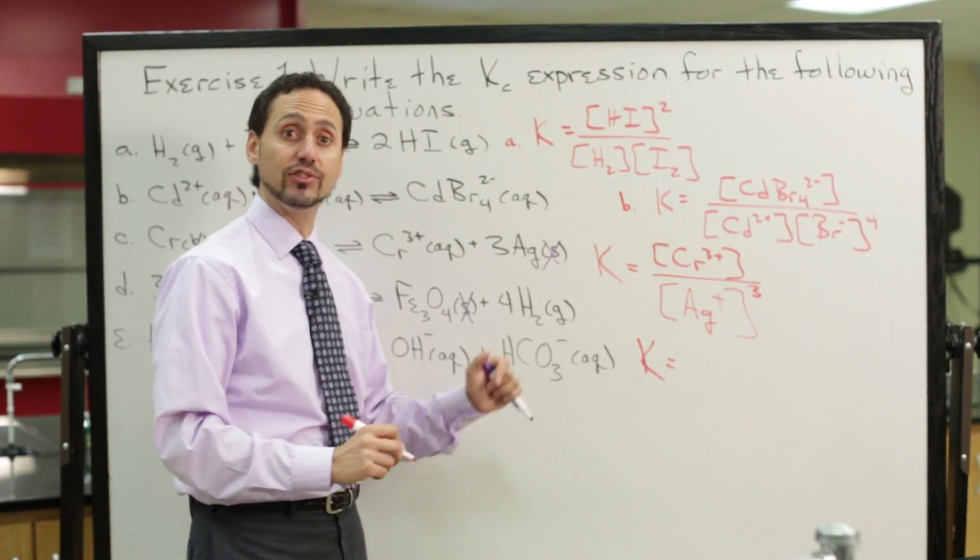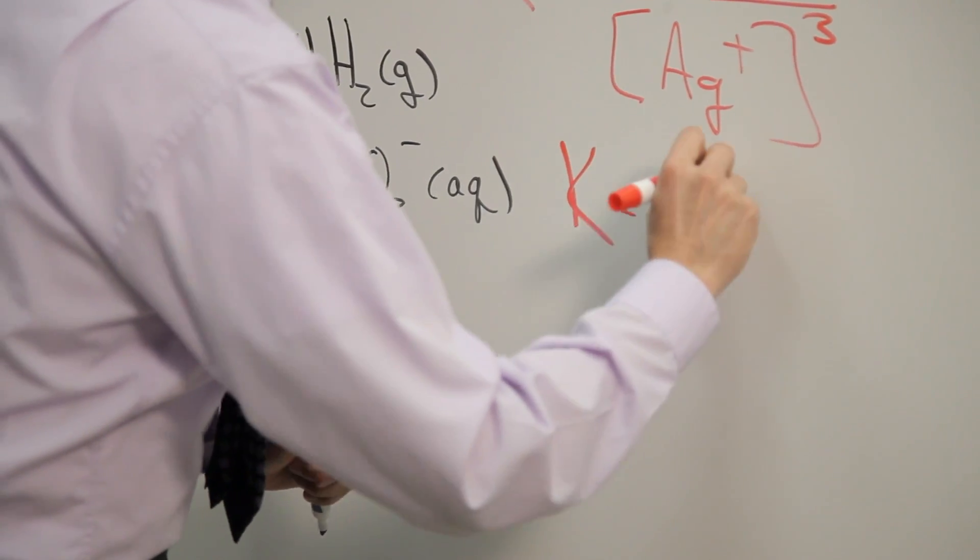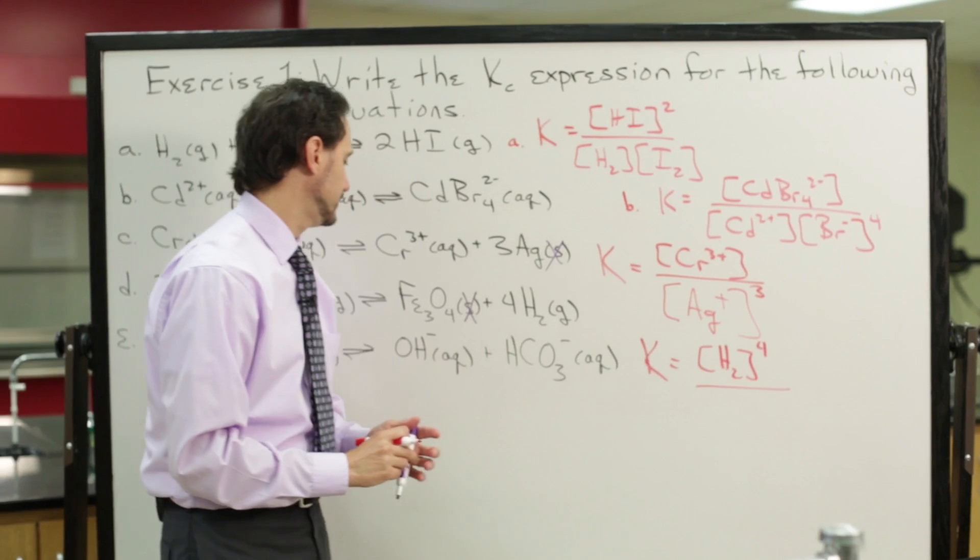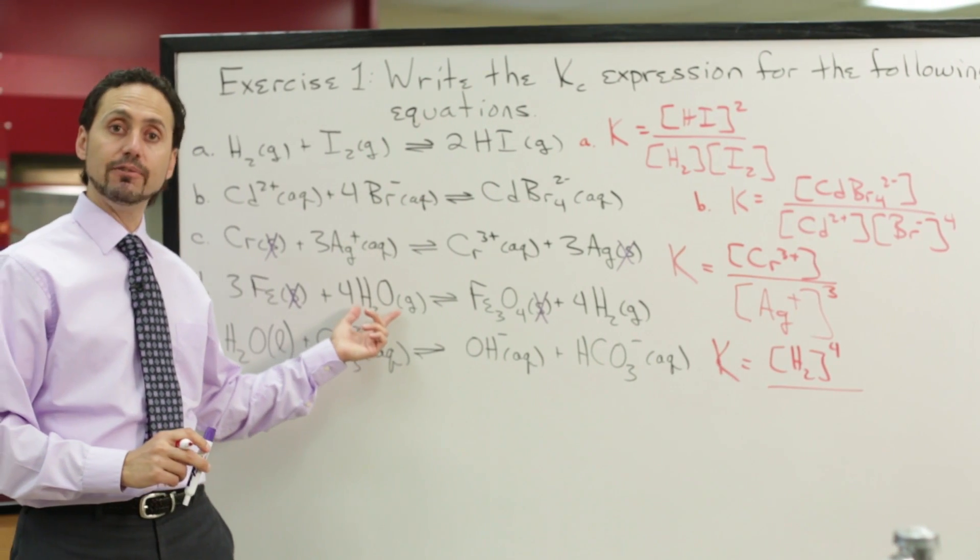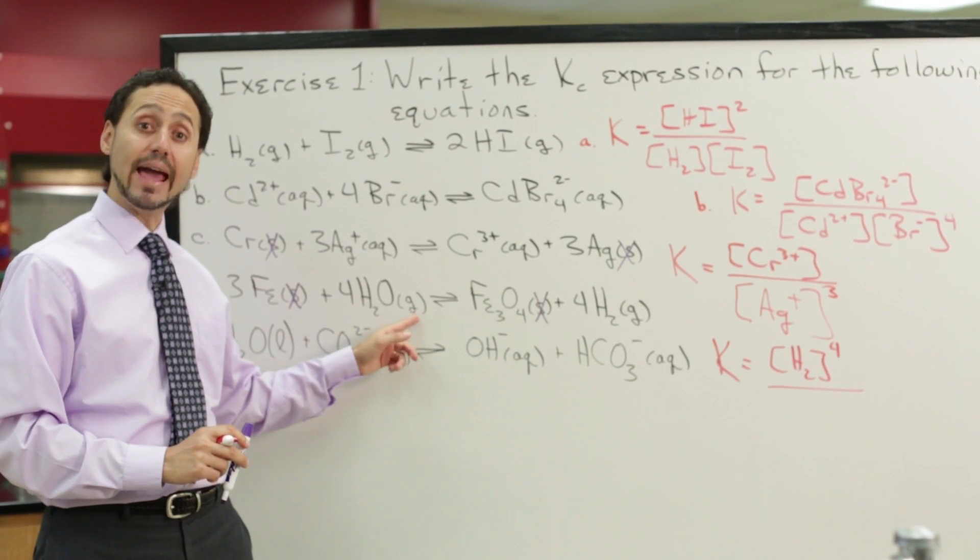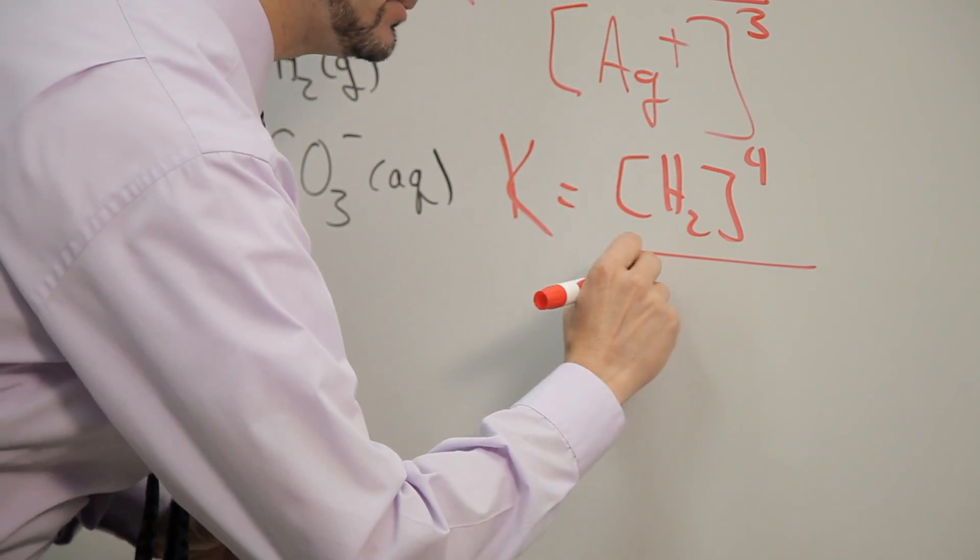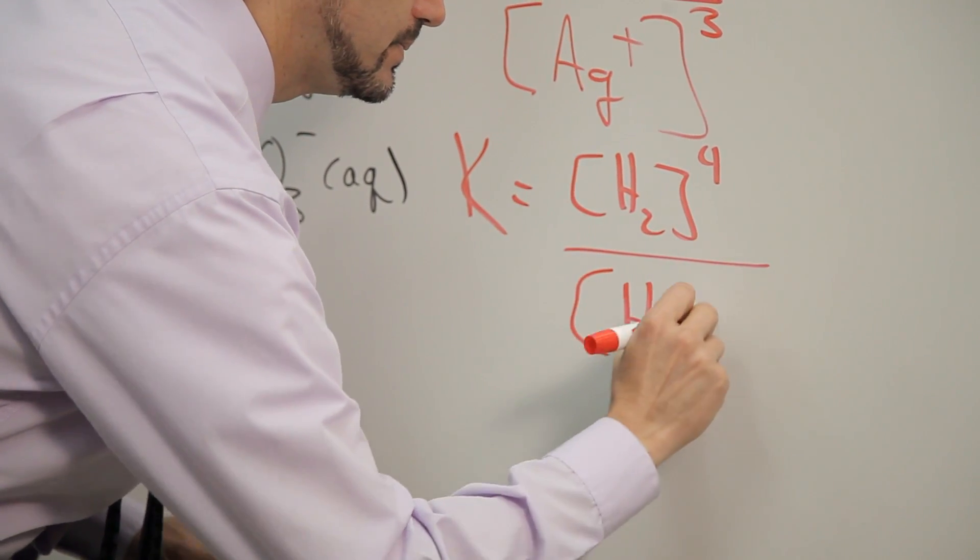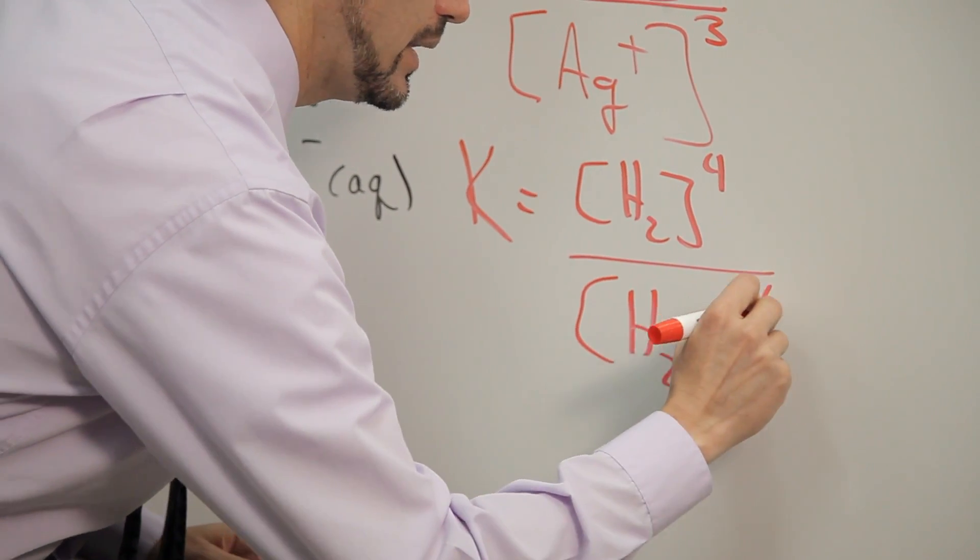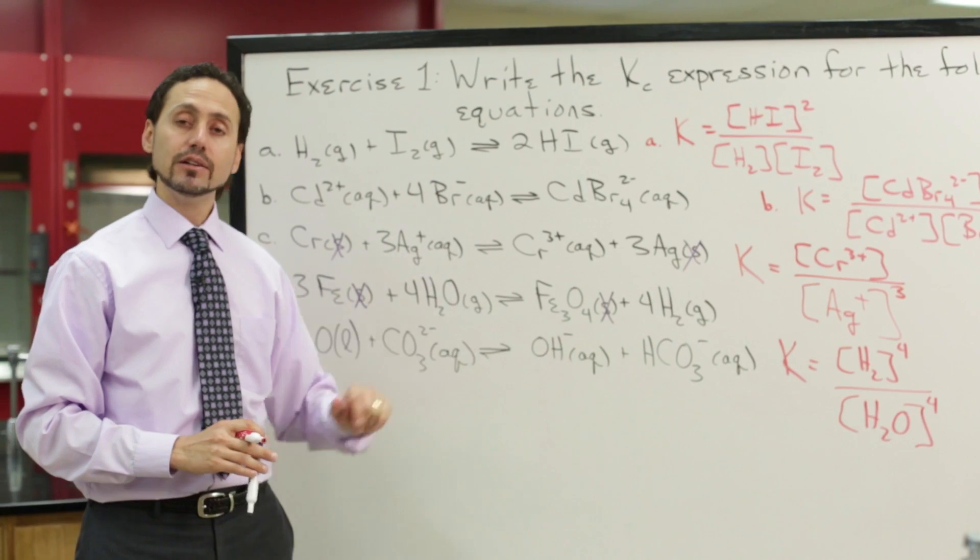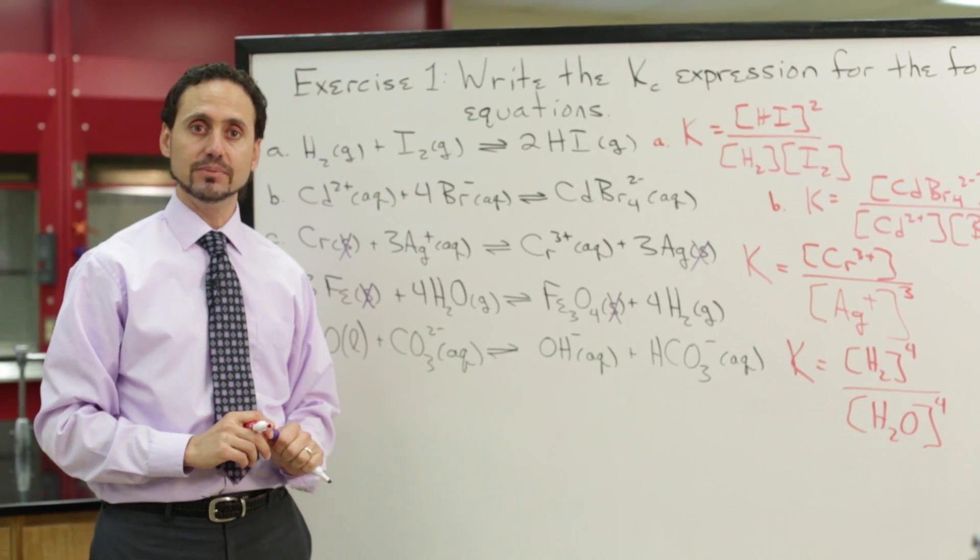We have four moles of hydrogen gas on the product side, so that's hydrogen raised to the fourth power. And we also have four moles of water in the gas phase, so we need to include that in the denominator raised to the fourth power. So again, not too bad, fairly easy.